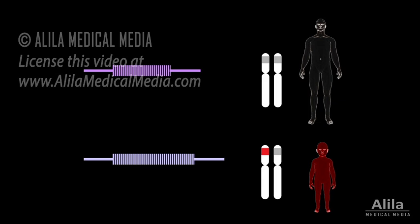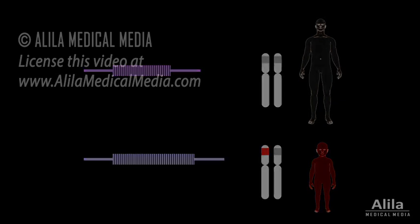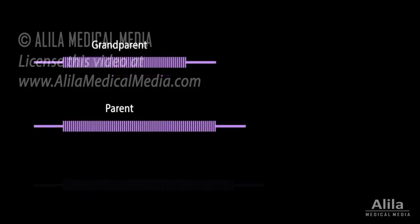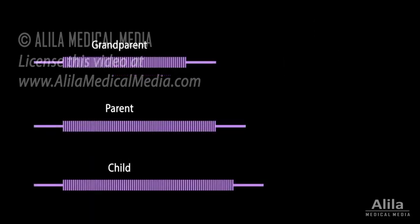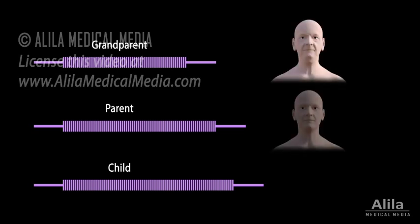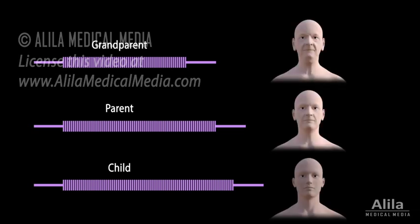As the size of the polyglutamine stretch increases from generation to generation, the onset of symptoms gets earlier with each generation. This phenomenon is known as genetic anticipation.